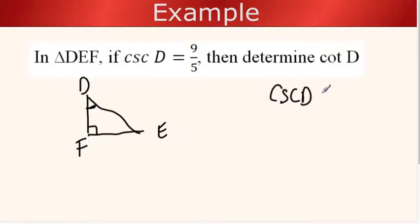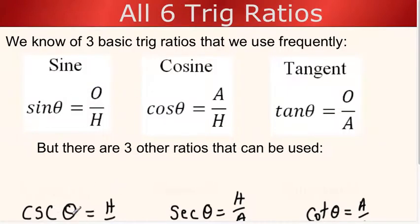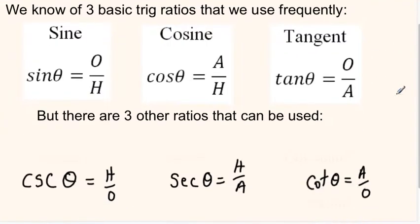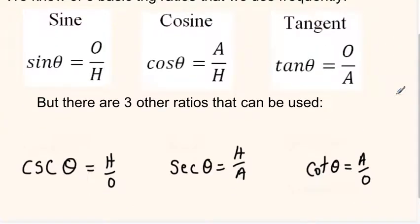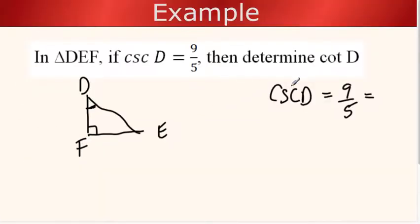Cosecant of D is 9 over 5. Remember that the cosecant is the reciprocal of sine, so the cosecant is the hypotenuse over the opposite. If I label my triangle, if the cosecant of D is 9 over 5, then the hypotenuse must be 9, and the opposite must be 5.